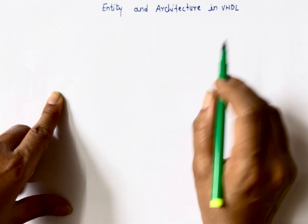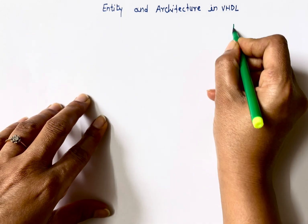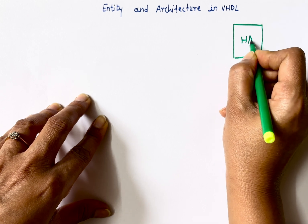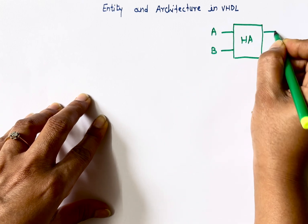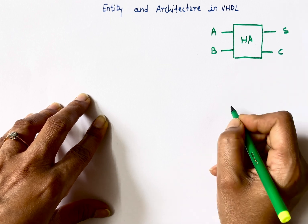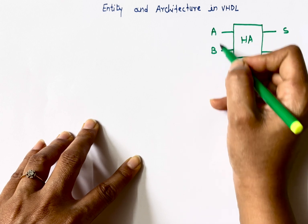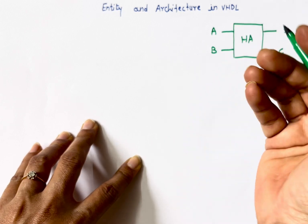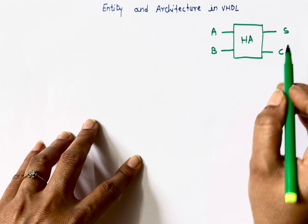Let's take a simple example of a half adder. It has two inputs — A and B — and two outputs: sum (S) and carry (C). Entity will tell you the circuit has two inputs and two outputs, and architecture will tell you sum is A XOR B and carry is A AND B.